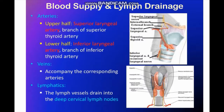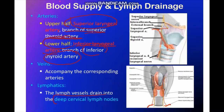Regarding blood supply and lymphatic drainage of the larynx: the upper half is supplied by the superior laryngeal artery, a branch of the superior thyroid artery, and the lower half by the inferior laryngeal artery, a branch of the inferior thyroid artery. The veins follow the same pattern as the arteries. The lymphatics of the larynx drain into the deep cervical lymph nodes.